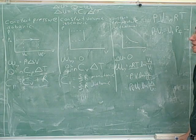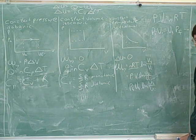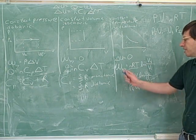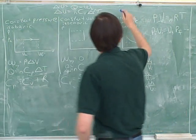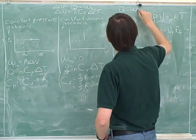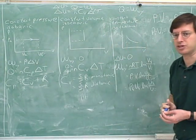Well, delta U is equal to zero, so the work will equal the heat. Yeah, the heat would equal the work done by the gas. When delta U is equal to zero, this equation becomes this equation right here.